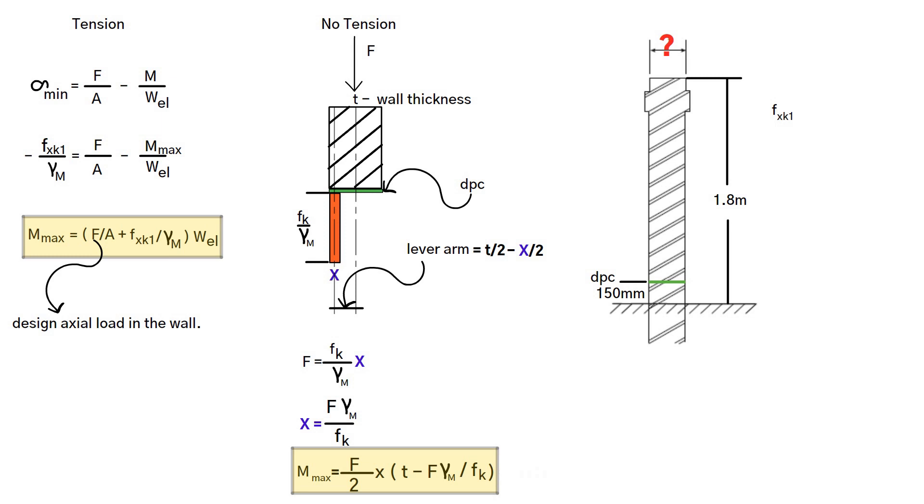Characteristic tensile bending strength 0.3 N/mm². Characteristic compressive strength 7.1 N/mm². Characteristic wind load 0.5 kN/m². Unit weight of brickwork 22 kN/m³. Partial safety factor for material strength 3.